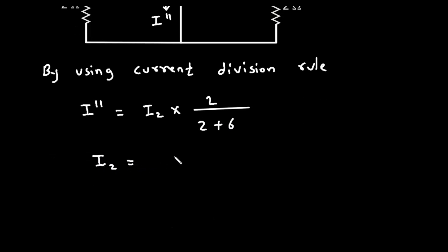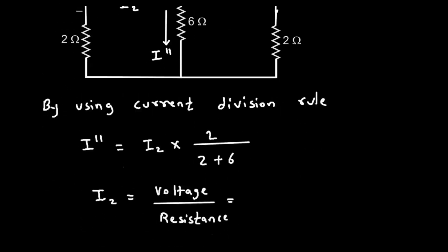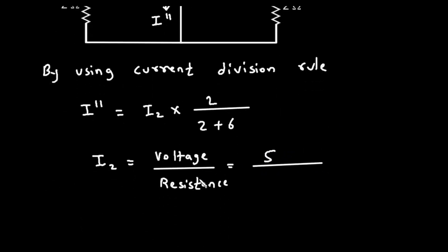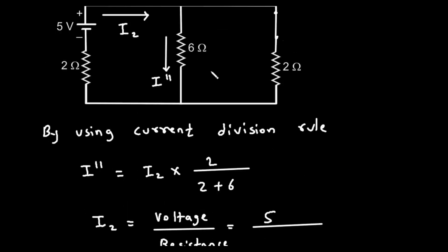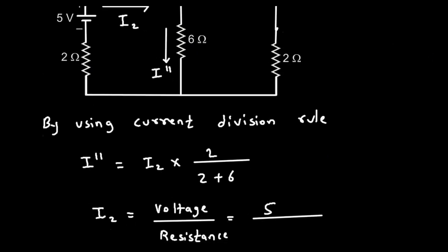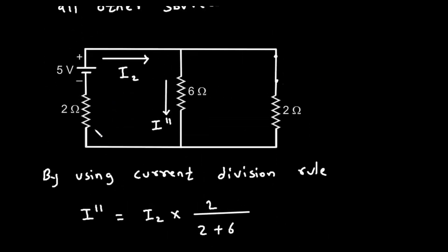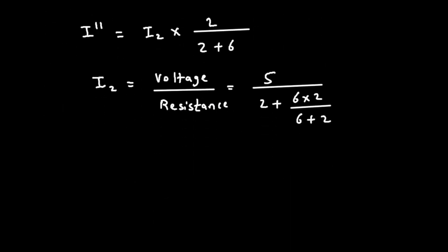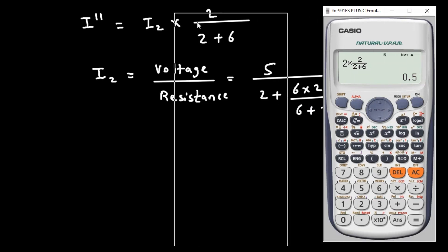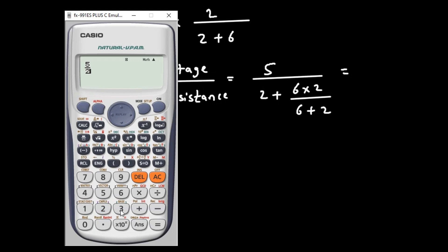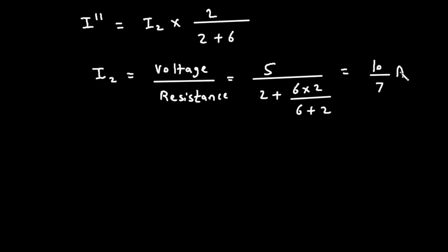I2 is equal to voltage divided by resistance. The value of voltage is 5V, divided by the resistance. As we can see, the 2 ohm is in series with the parallel combination of 6 ohm and 2 ohm, so it will be 2 plus (6 × 2)/(6 + 2). Solving this, we get 5 divided by [2 + (6 × 2)/(6 + 2)], which equals 10/7 ampere.